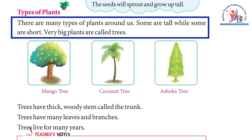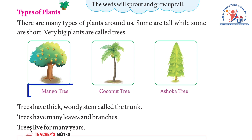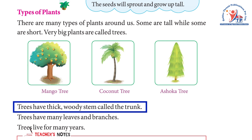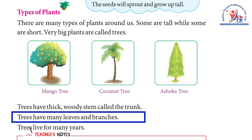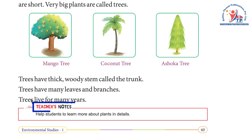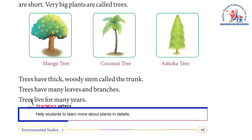Very big plants are called trees — mango tree, coconut tree, ashoka tree. Trees have a thick woody stem called the trunk. Trees have many leaves and branches. Trees live for many years.